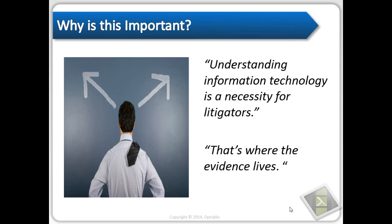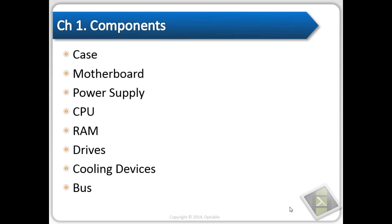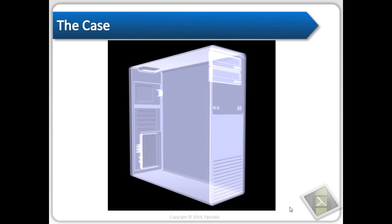We're going to talk about how those native files get created and stored and what's going on behind the scenes, because that's important for production, validation, and authentication of documents. So we're going to run through the basic components of a computer — what constitutes the individual parts. Some of these are going to be very important in terms of document authentication as we go through them.